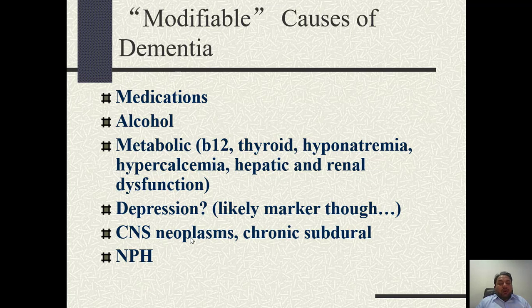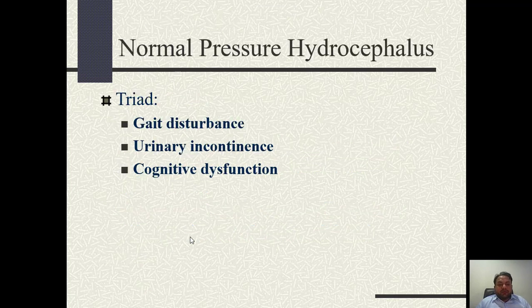Modifiable causes of dementia include medications, alcohol, metabolic causes such as B12 deficiency, thyroid dysfunction, hyponatremia, hypercalcemia, and hepatic or renal dysfunctions. Depression, CNS infections, and chronic subdural hematoma are also modifiable causes. Normal pressure hydrocephalus is treatable via shunting.